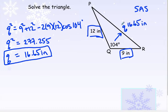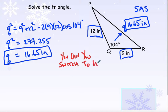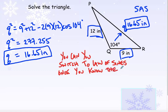Once you have these three sides, if you want to solve for either angle P or angle R, you could switch to law of sines. The general rule is: as long as you know the largest angle, you can switch to law of sines. In this example, 104 degrees has to be the largest angle in this triangle because you can never have more than one obtuse angle in a triangle. This is obtuse, so there's only one. So I can now use law of sines.